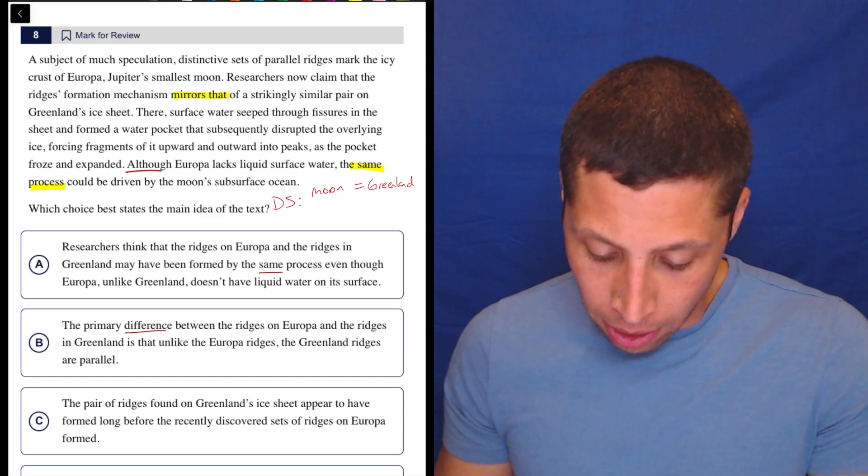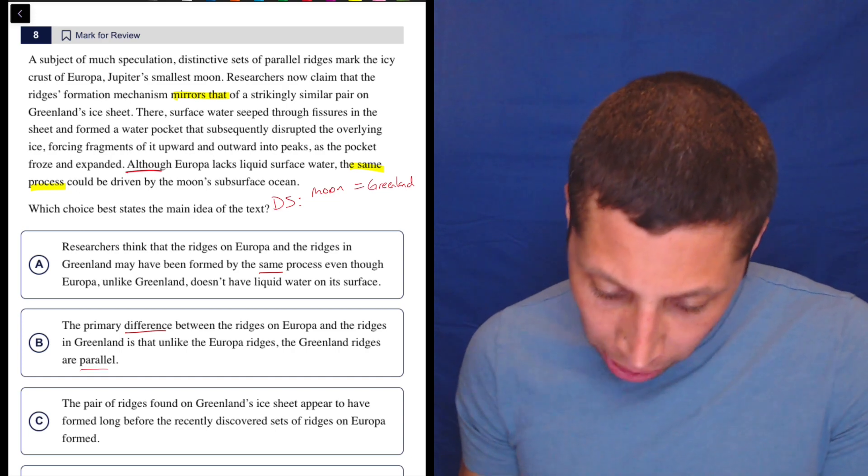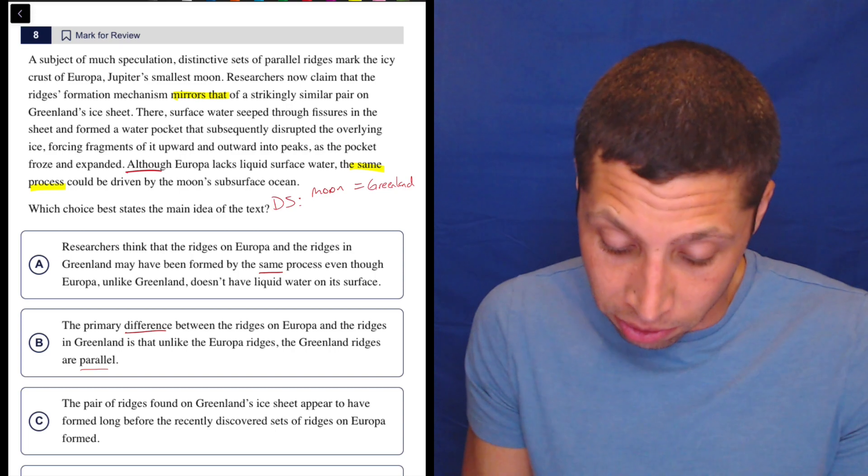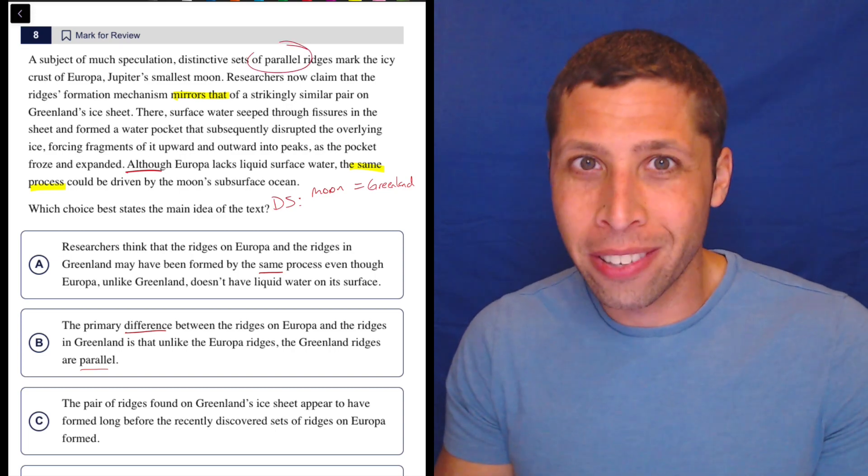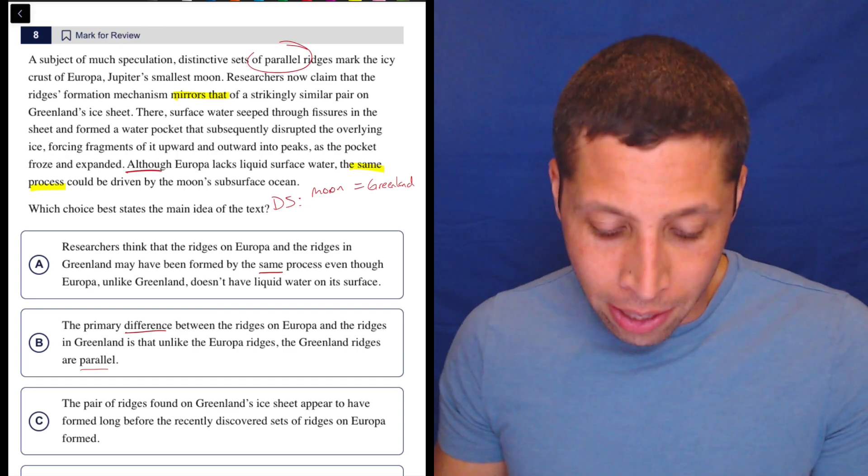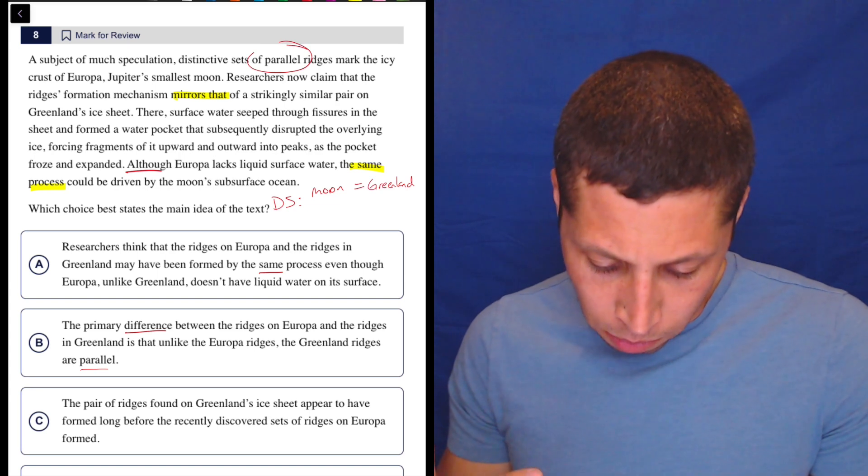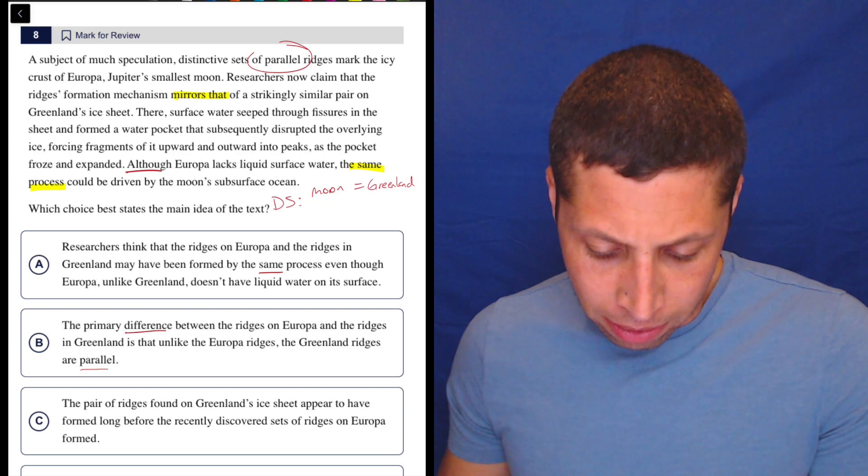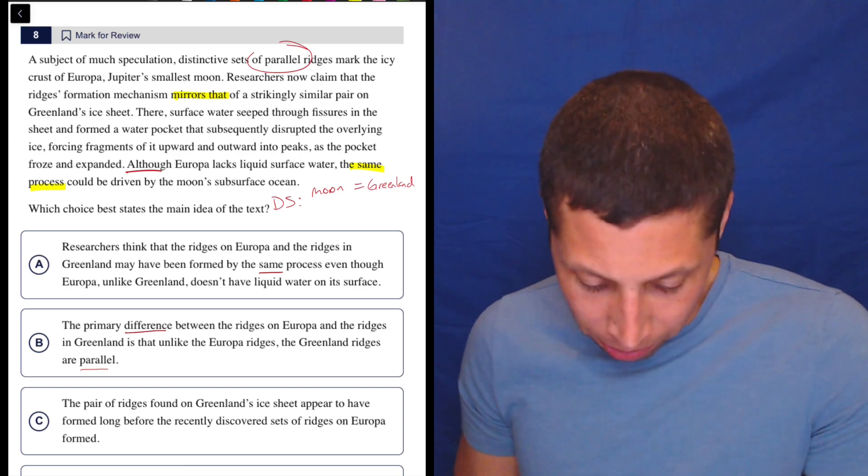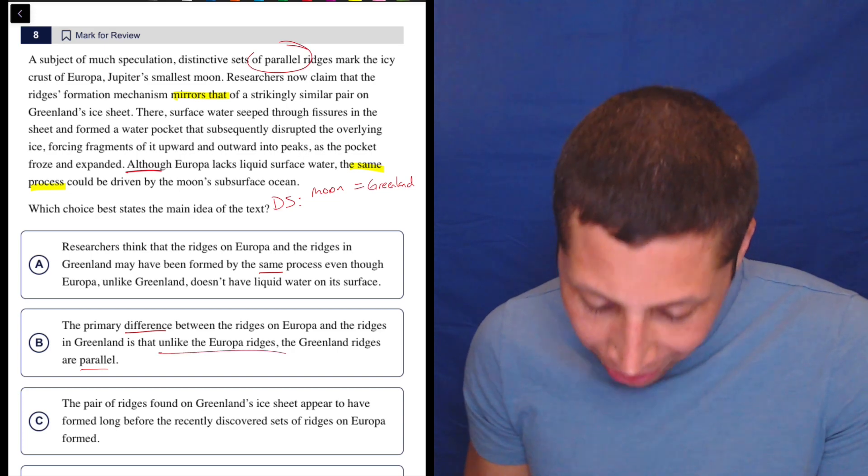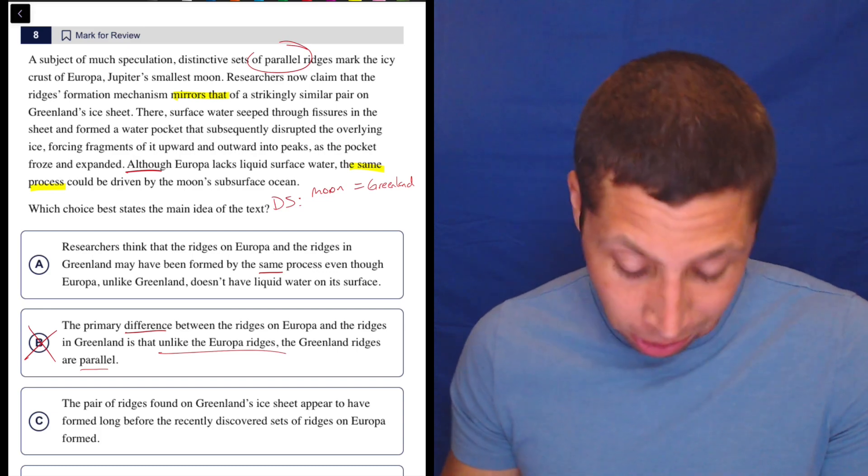If we wanted to, we could dive a little deeper here. The main difference is that the ridges on Greenland are parallel. Okay. Did they talk about something being parallel? That's an easy word to find, right? This is why you don't try to memorize every little detail. If it comes up in a choice, you can just go searching for that idea. Parallel. Okay. So there's parallel ridges on Jupiter. So I don't know if there's parallel ridges on Greenland, but it says that they're parallel on Jupiter's moon. So that's already proving this wrong. Unlike the Europa ridges, the Greenland ridges are parallel. It's saying that Europa also has parallel ridges. So just wrong for a couple of reasons.